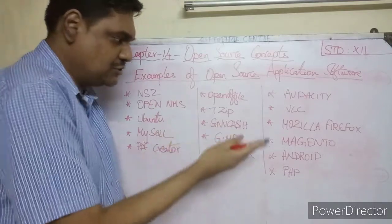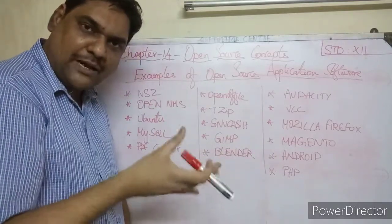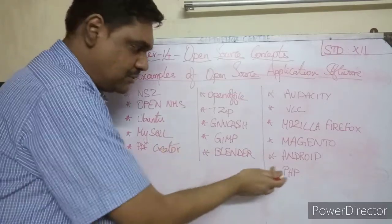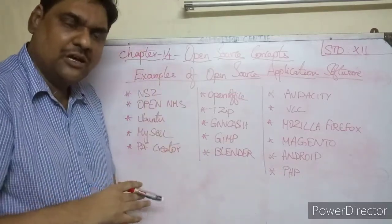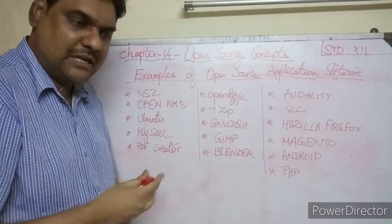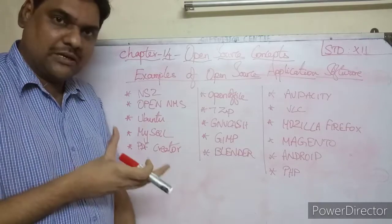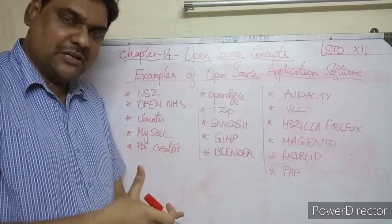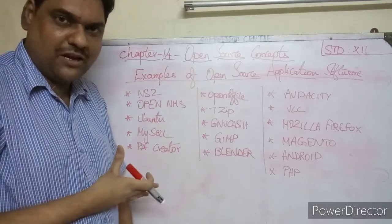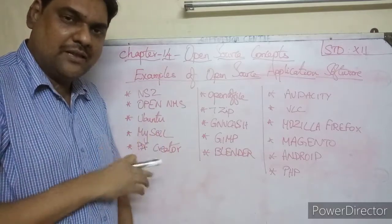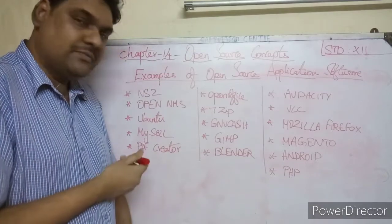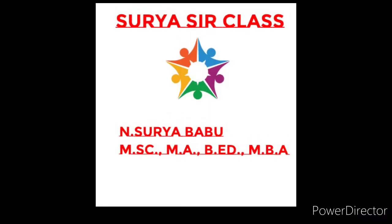Mozilla Firefox is a famous open source browser. Magento, Android OS, and PHP are also open source softwares. Android is a well-known open source software where many people contribute modifications. So the original author's work becomes something that many people build upon together. Thank you, my dear children.